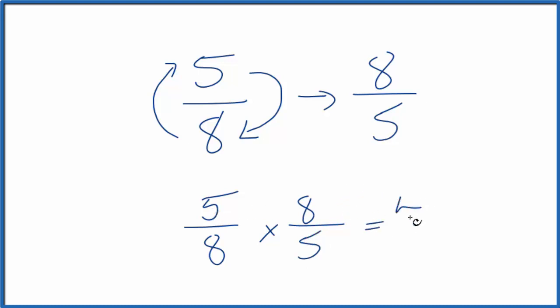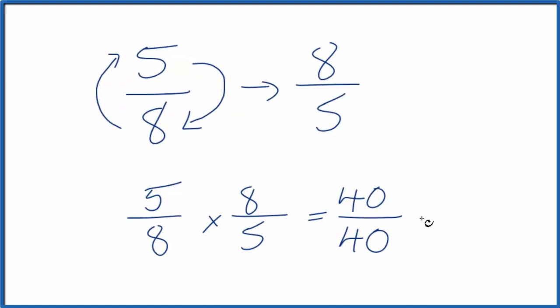5 times 8 is 40, and 8 times 5 is 40. 40 divided by 40, that equals 1. So we did this first part correctly.